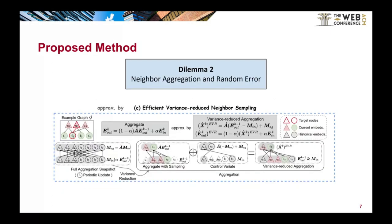The second challenge is the high cost of neighbor aggregation. When we aggregate all the neighbors for the target nodes, nodes representing popular items and active users take a lot of time. However, if we use neighbor sampling, the random error is too large. To address this, we propose a variance-reduced neighbor sampling approach, which has the same linear complexity as vanilla neighbor sampling methods but with a very small random error.